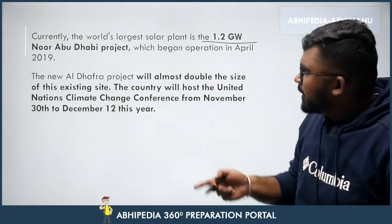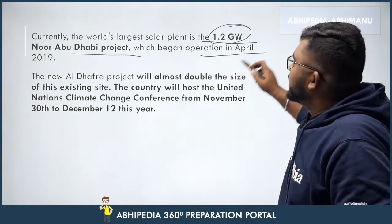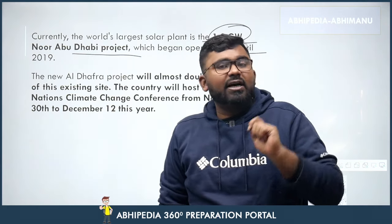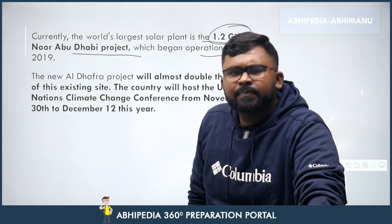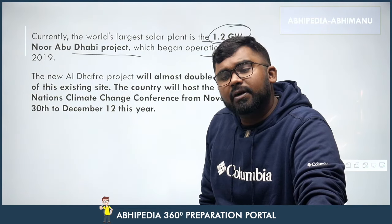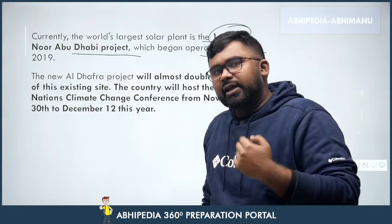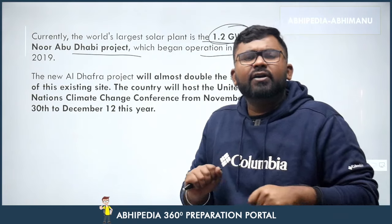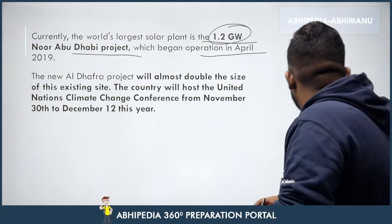The previous record holder was a 1.2 gigawatt plant which began operation in April 2019, meaning UAE has been doing good work in solar energy. Looking ahead, India-UAE relations are strong — we have linked payment systems like UPI — so remembering UAE on the map along with neighboring countries, major rivers, and water bodies is important.